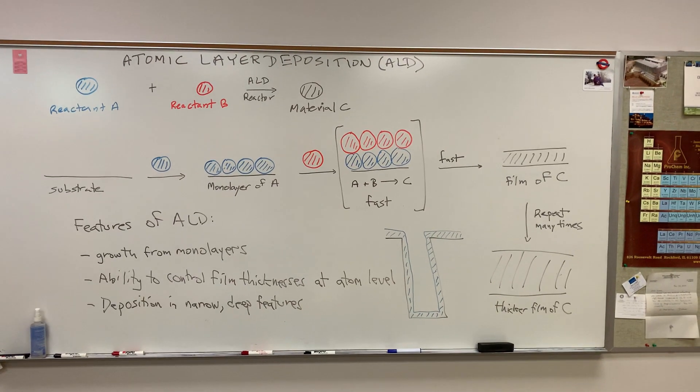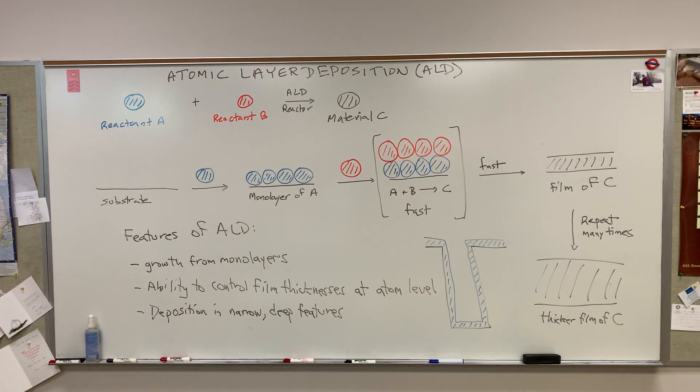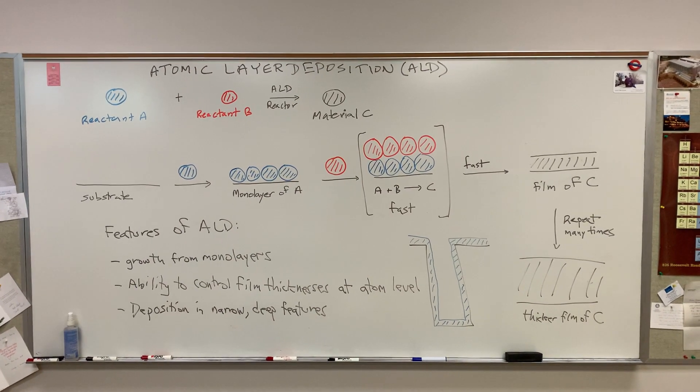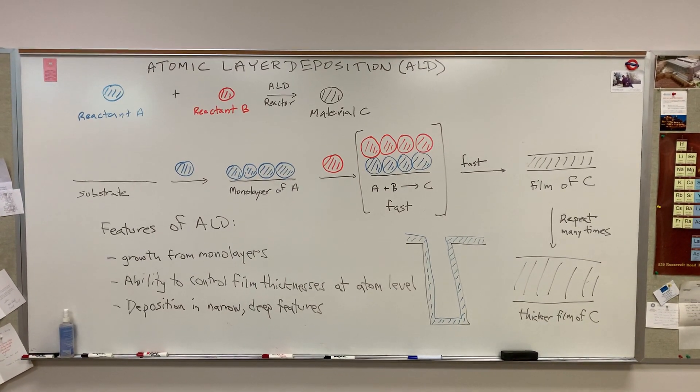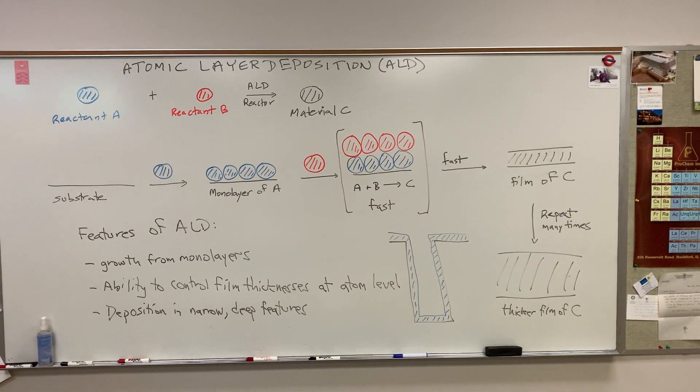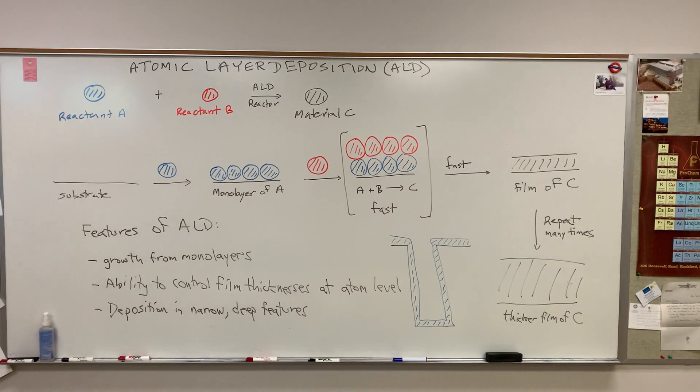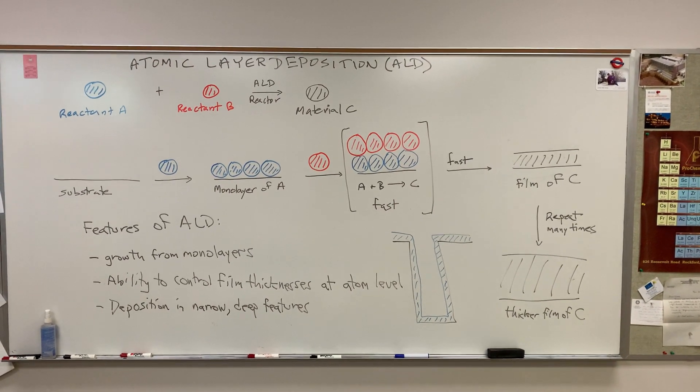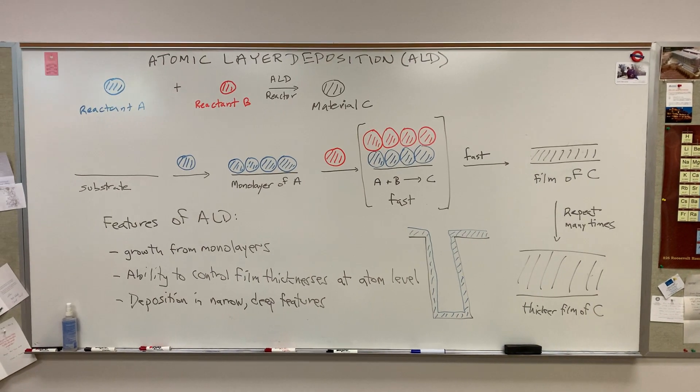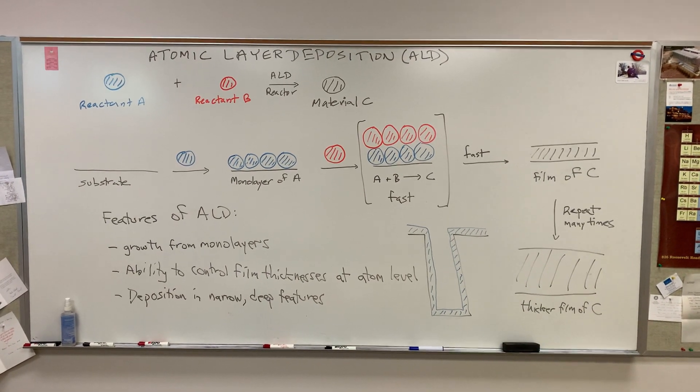And this is the key sequence of steps in atomic layer deposition, the formation of this monolayer of the desired film C. And then we can repeat this sequence of A plus B many times to achieve a thicker film of C. And in fact, the thickness of the overall film can be controlled by the number of times that you repeat the cycle.